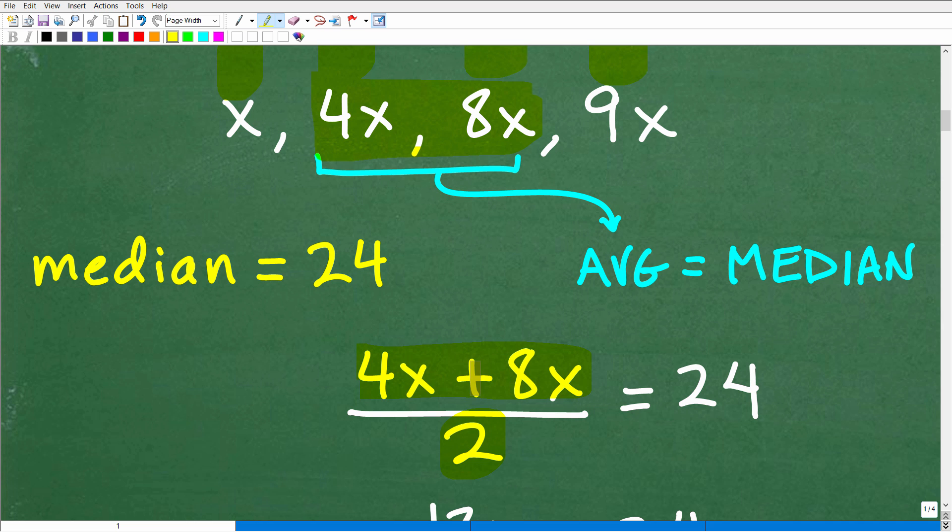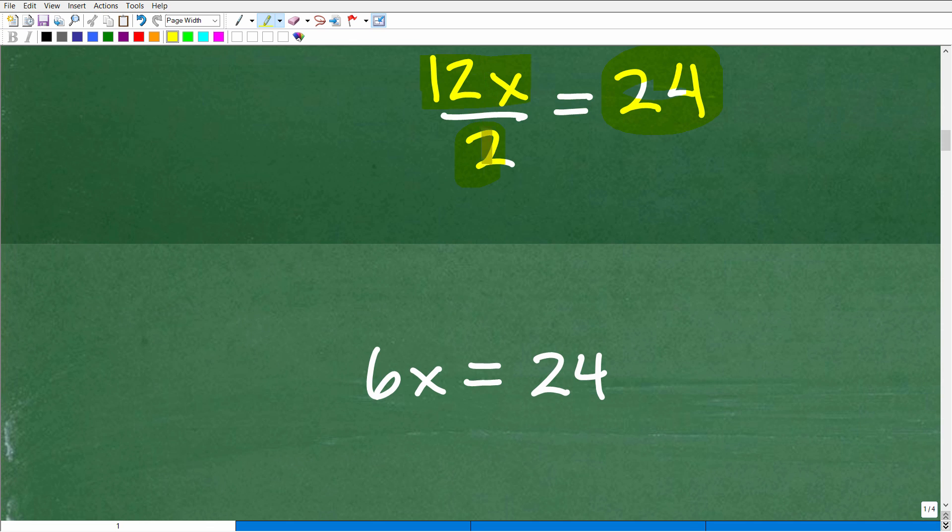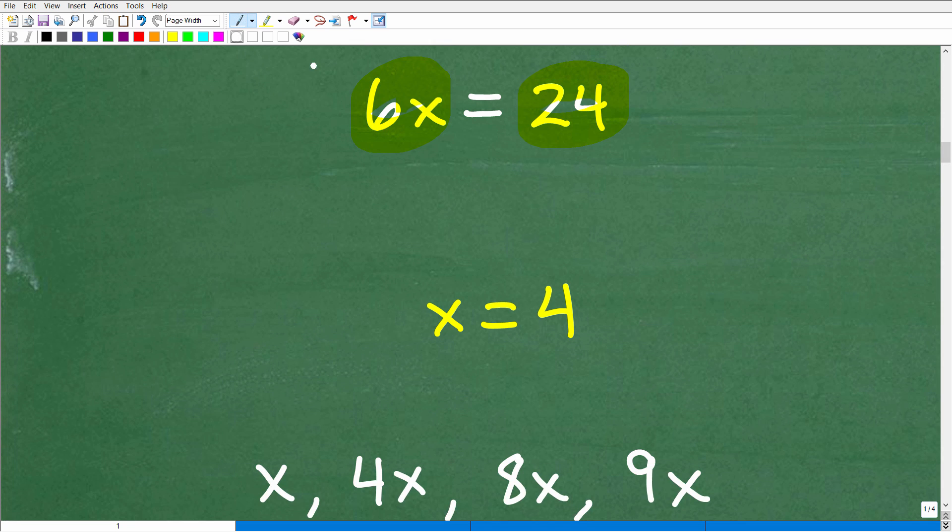Now, let's go back to the problem here. It says the median of x, 4x, 8x, and 9x is 24. So we know that the actual median is a number. That number is 24. So we can construct the median right here. Of course, we don't know what x is, but we do know that the median is 24. So we can solve for x. So 4x plus 8x divided by two, this is how we would calculate the median, and the median is equal to 24. So we're going to set up this equation and solve it. So 4x plus 8x is 12x over two. That's equal to 24. So we're going to solve this. 12x divided by two is 6x. So 6x is equal to 24. So let's go ahead and solve for x by dividing both sides of the equation by 6. So 24 divided by 6 would be 4. So x is equal to 4.